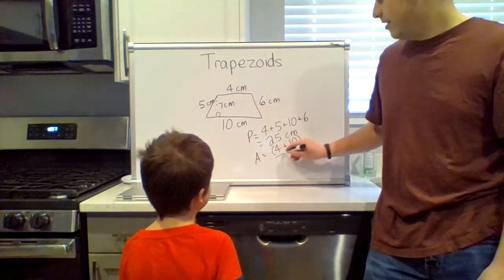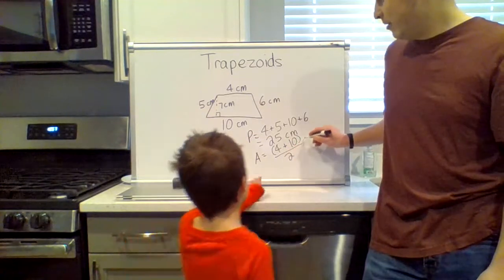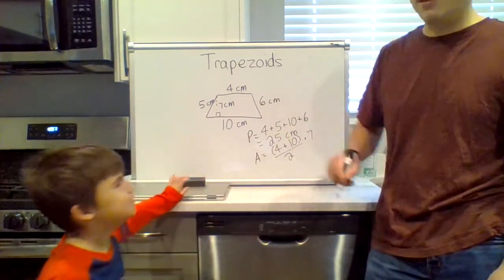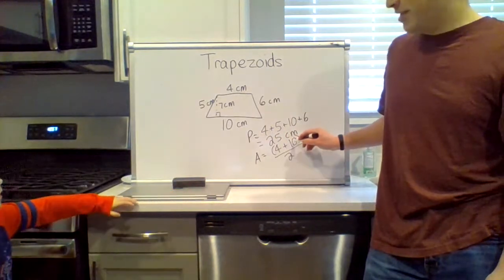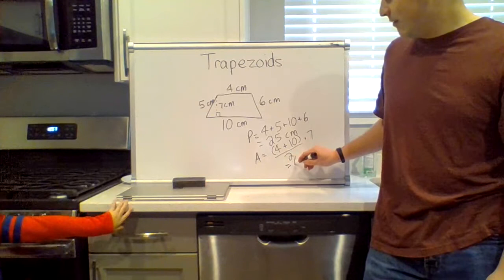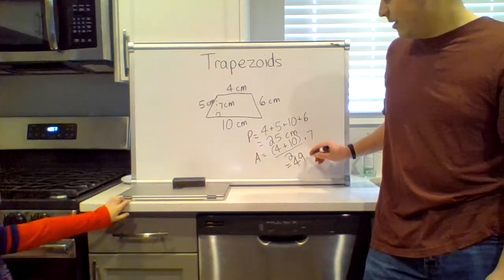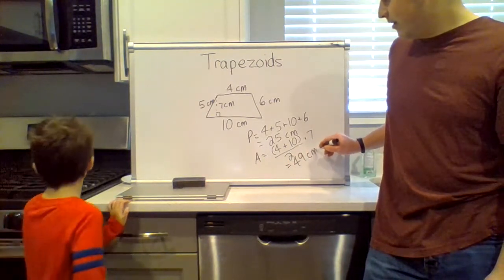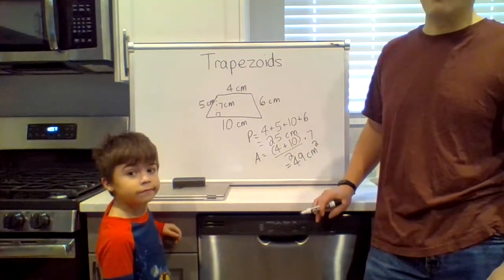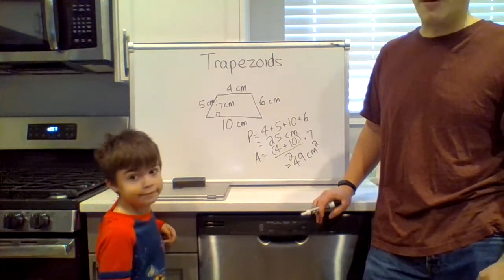Four plus ten divided by two times the height of seven. Four plus ten is fourteen, divided by two is seven, seven times seven is forty-nine. Oddly enough, it just worked out this way that both times the number there was the same number there. That's once again a weird coincidence when I make these problems up.